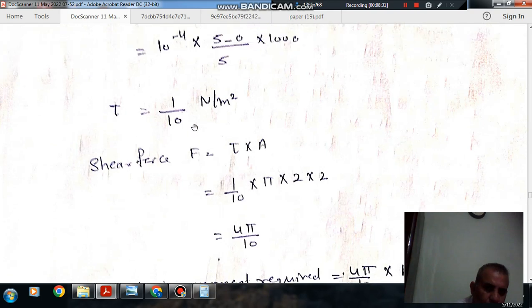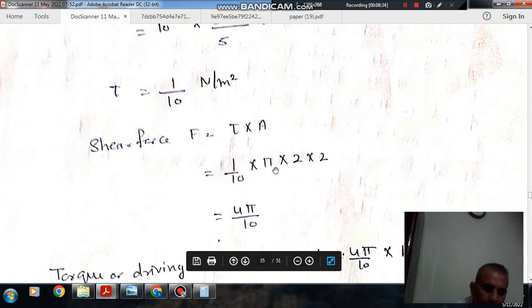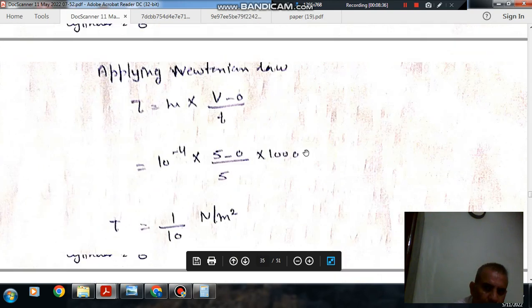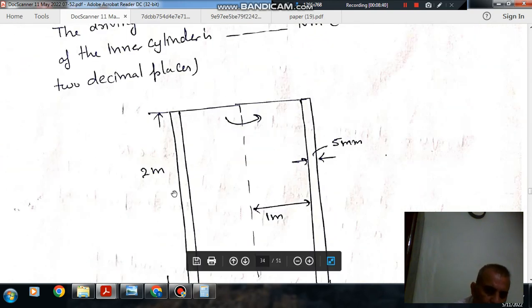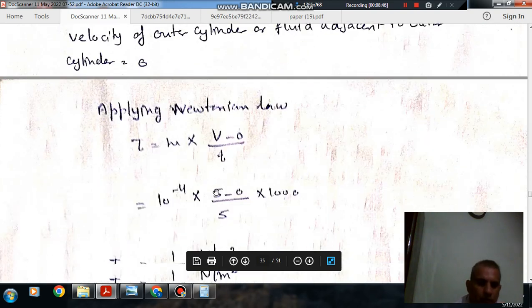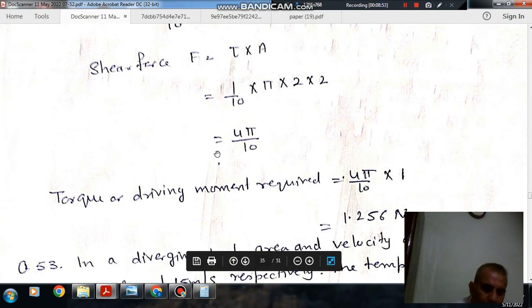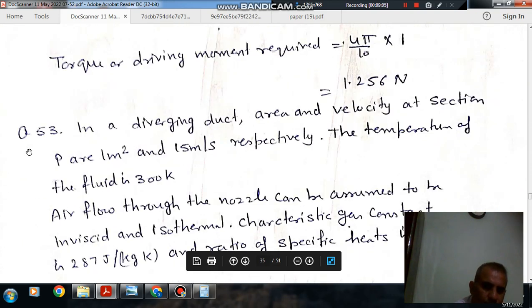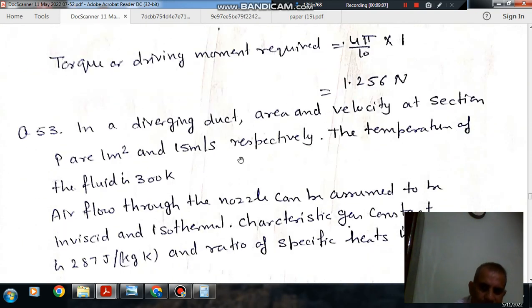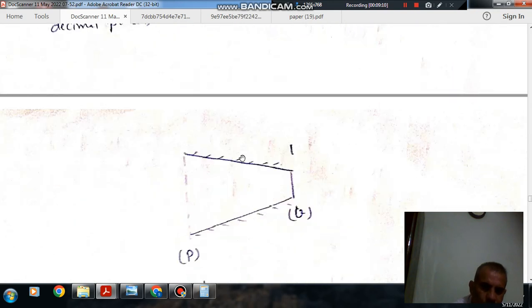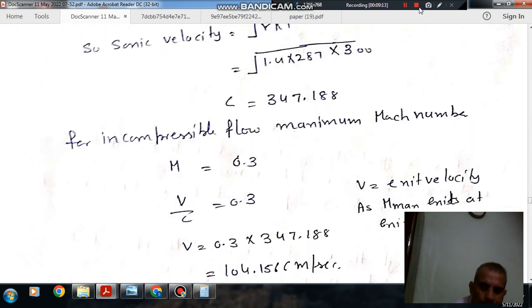The shear force is τ times area equals (1/10) times π times diameter times height equals (1/10) times π times 2 times 2 equals 4π/10. The torque is force times radius equals (4π/10) times 1 equals 1.256 Newton-meters, rounded to 1.26 Nm.